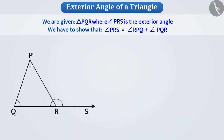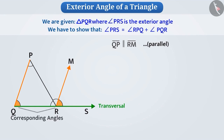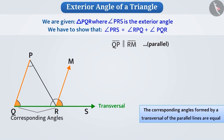Let's reconfirm this using a logical method. We are given triangle PQR where angle PRS is the exterior angle, and we have to show that angle PRS equals angle RPQ plus angle PQR. To show this, we will draw line RM from vertex R parallel to side QP of triangle PQR. Side QP is parallel to line segment RM, and QS is a transversal. Angle PQR and angle MRS are corresponding angles formed by transversal QS of the parallel lines QP and RM. Since corresponding angles formed by a transversal of parallel lines are equal, angle PQR equals angle MRS.